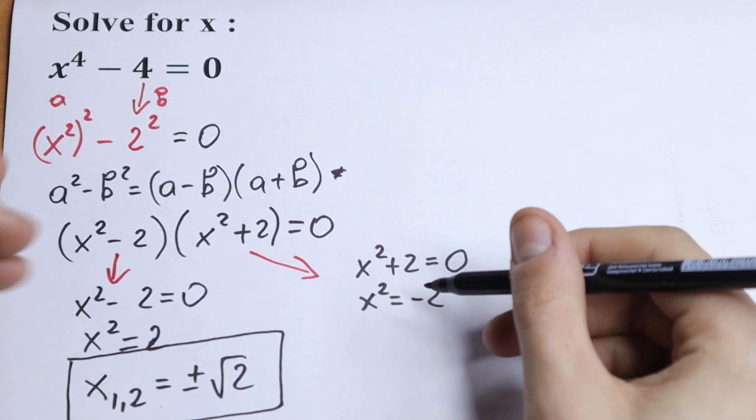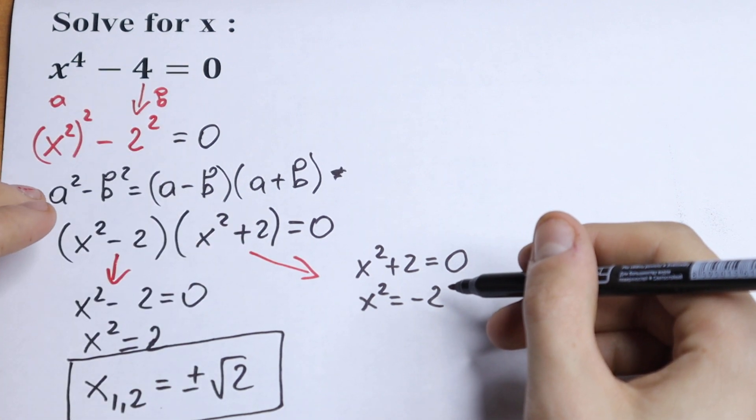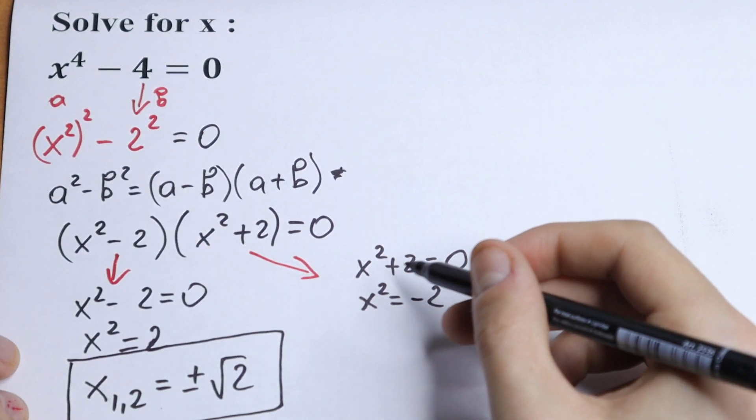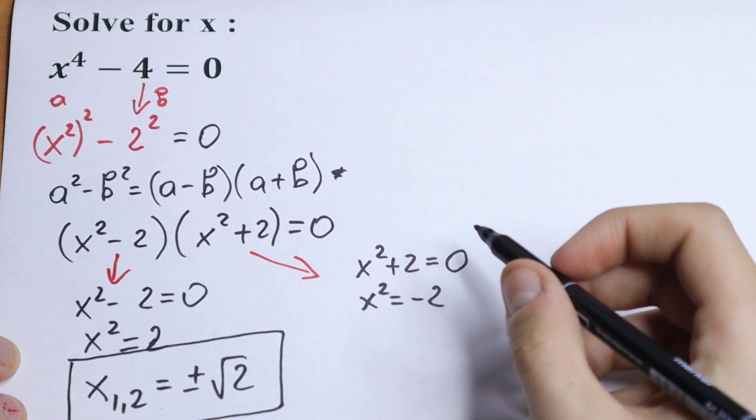Because x square cannot be equal to minus 2. And let's take square root from both sides.